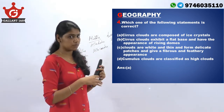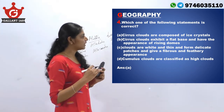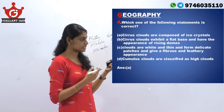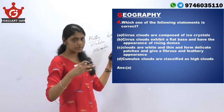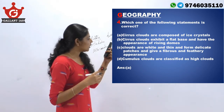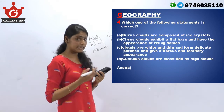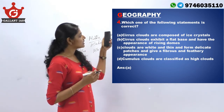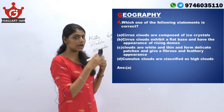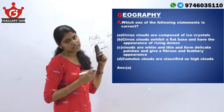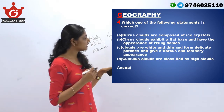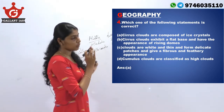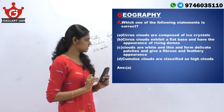Let's check the other options. Option B says cirrus clouds exhibit a flat base and the appearance of rising domes — but this is actually the characteristic of cumulus clouds, not cirrus. Option C says cumulus clouds are white, thin, and give a fibrous feathery appearance — but this is actually the characteristic of cirrus clouds, not cumulus. Options B and C have their descriptions interchanged. Option D says cumulus clouds are classified as high clouds — but it is cirrus clouds that are high clouds, not cumulus. So the only correct option is A: cirrus clouds are composed of ice crystals.